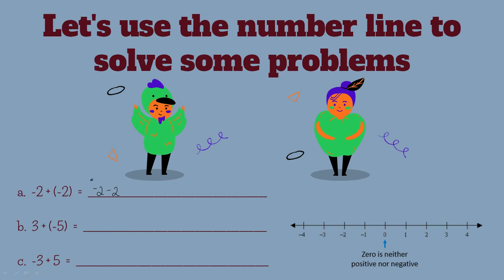Now that you know what you have to do, and you move to the left when you're subtracting — it's negative two minus two — you go one and two. Your answer will be a negative number, which is negative four.